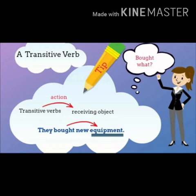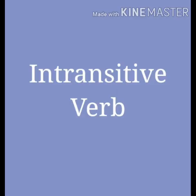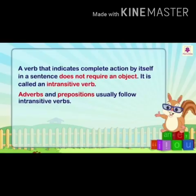Now we move towards intransitive verb. Definition: a verb that indicates complete action by itself in a sentence and does not require an object is called an intransitive verb. It means that intransitive verbs do not have an object, unlike transitive verbs.